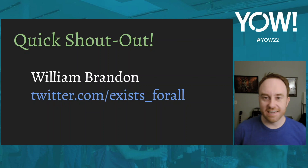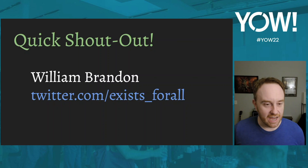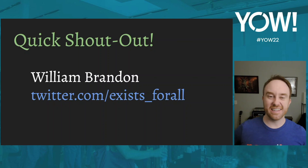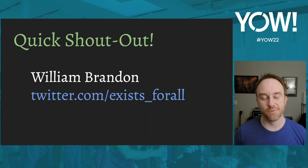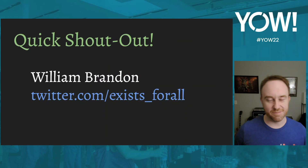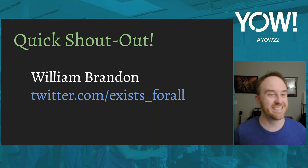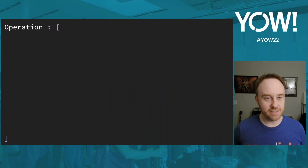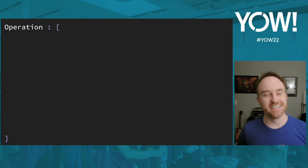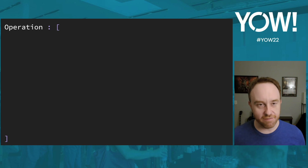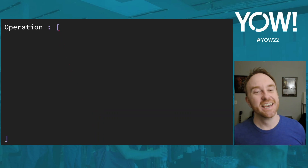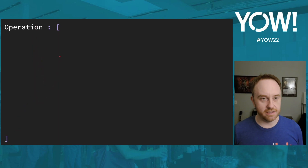I want to give a shout-out to William Brandon — exists_for_all on Twitter, researcher at MIT — who clued me into the internal representation technique I'm about to describe. I haven't fully implemented it yet, but I've done a proof of concept that the types work out, and I'm very excited about it especially for performance. Here's how we represent these operations under the hood: we define an Operation tag union. For HttpGetBytes, the tag contains the URL payload plus a continuation function.